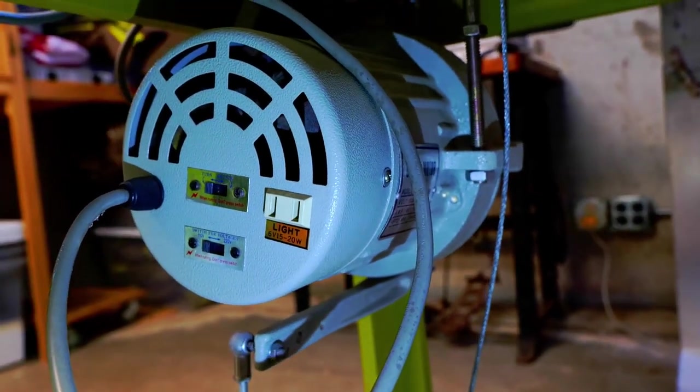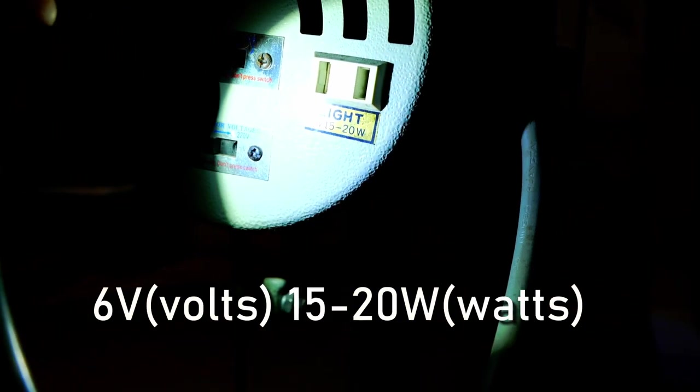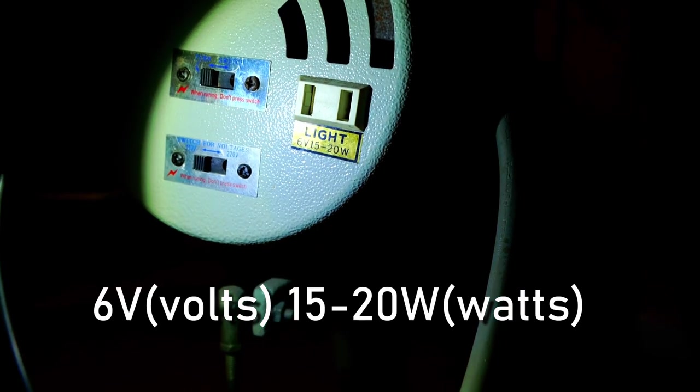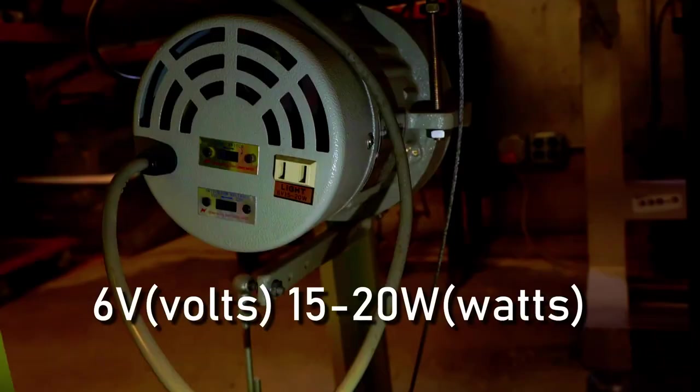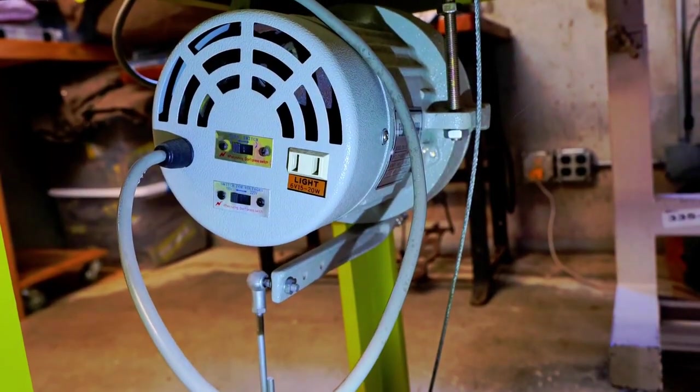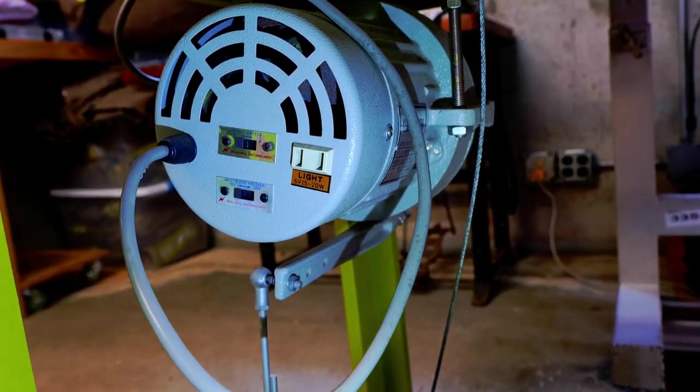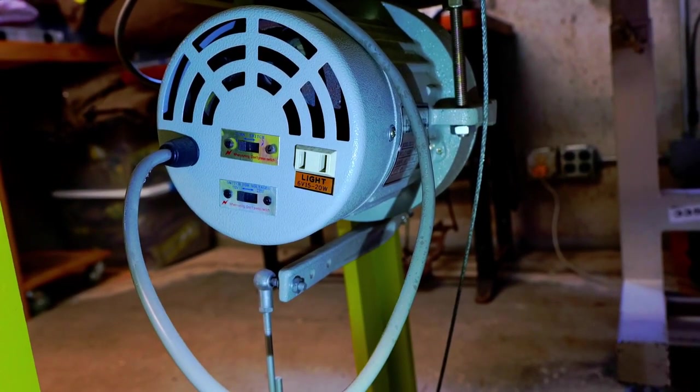And here's a newer clutch motor. Right here is a plug-in for a light. You can see it's marked there and under there maybe you can see it says six volts. So on this motor that has a six volt source for a light. So in that case you would use a six volt bulb.